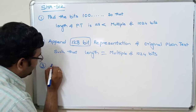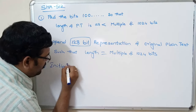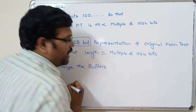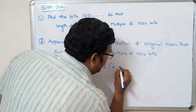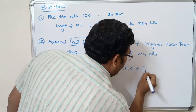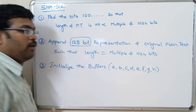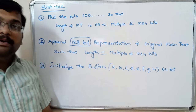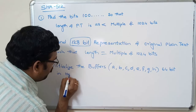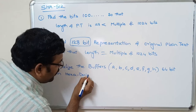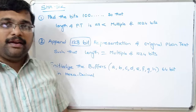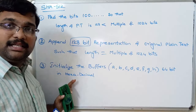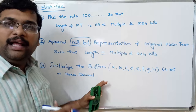The third step is to initialize the buffers. There are eight buffers, represented as A, B, C, D, E, F, G, and H, each of size 64 bits. We initialize these buffers in hexadecimal format — similar to an initialization vector — filling them with random numbers in hexadecimal.